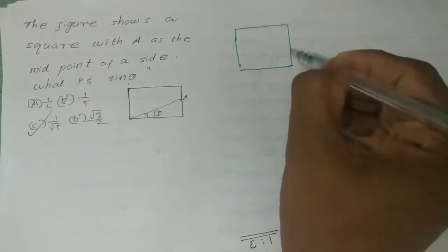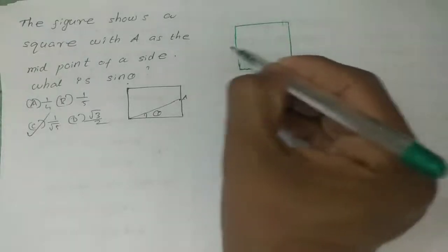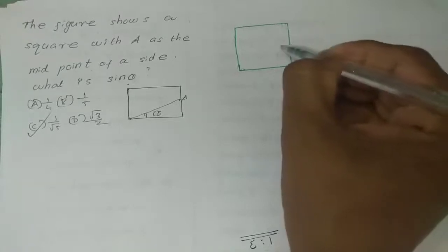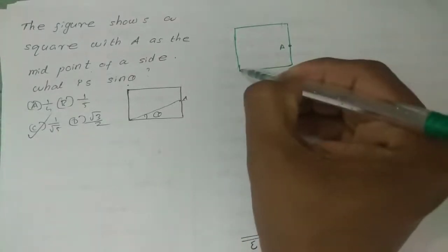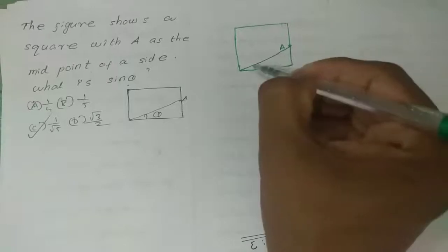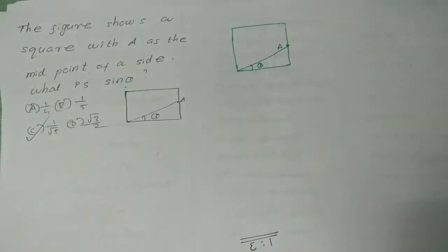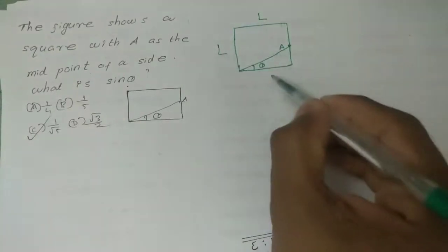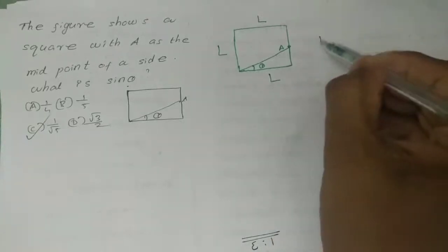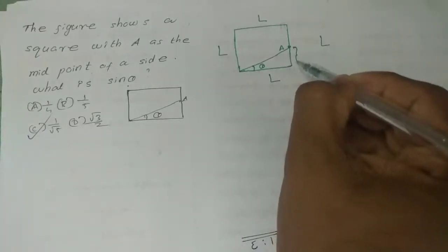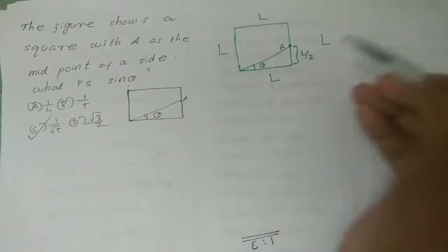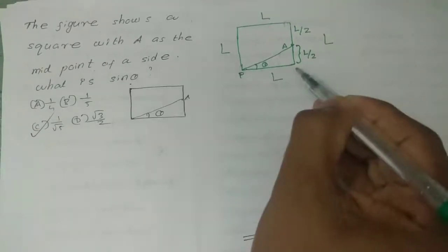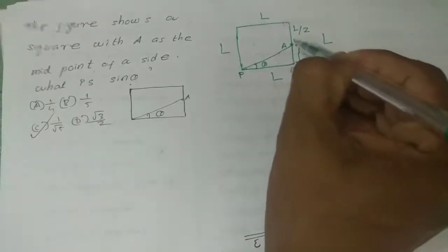This is the square. Point a is the midpoint. Let me draw the diagram with the angle theta. The square has the midpoint a, and the angle sine theta. The square side length is L, and point E. Here the angle is 90 degrees.